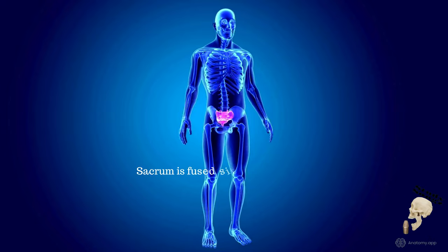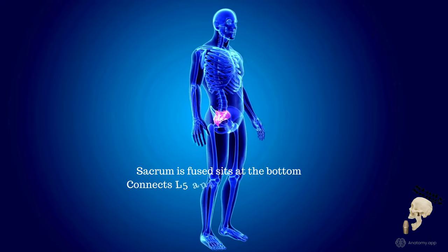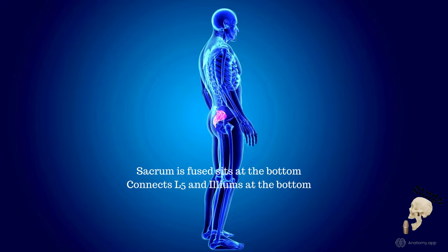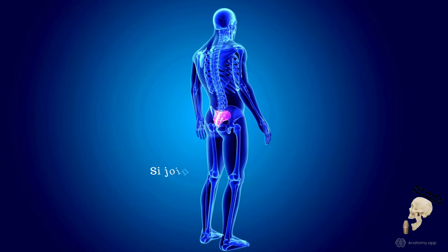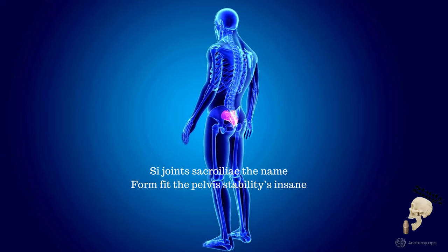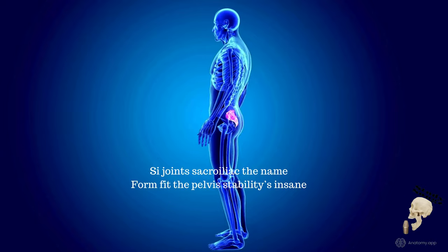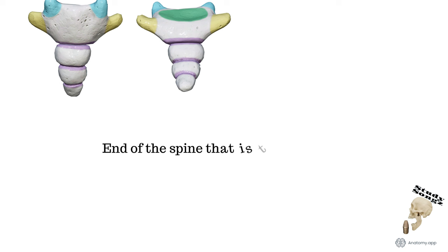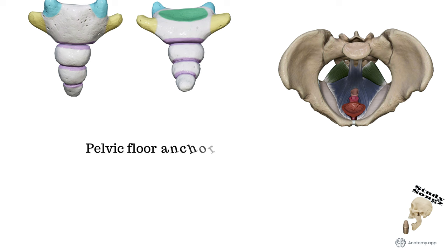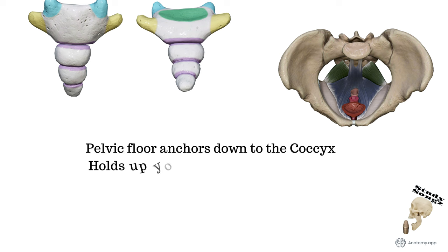Sacrum is fused and it sits at the bottom — connects L5 and the ilium at the bottom. SI joint — sacroiliac — is the name. Forms the pelvis for stability. End of the spine, that is the coccyx — fused few vertebrae make up the coccyx. Pelvic floor anchors down to the coccyx and holds up your stuff so you won't drop it.